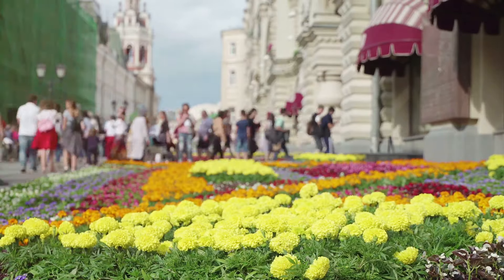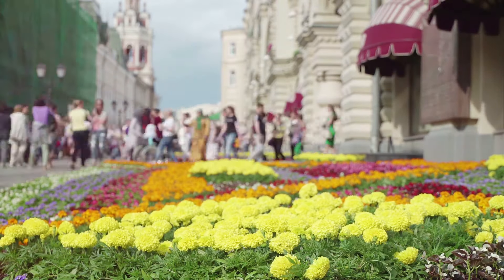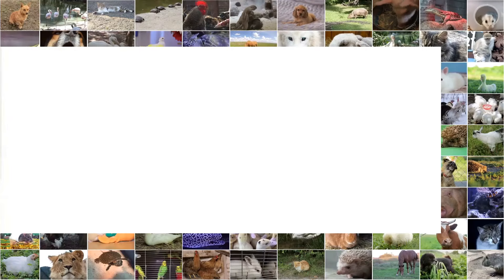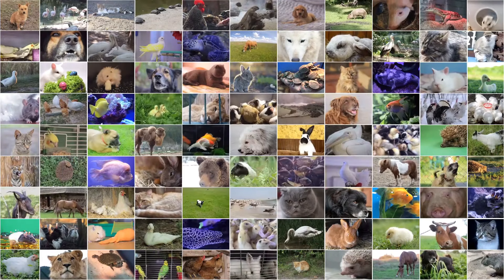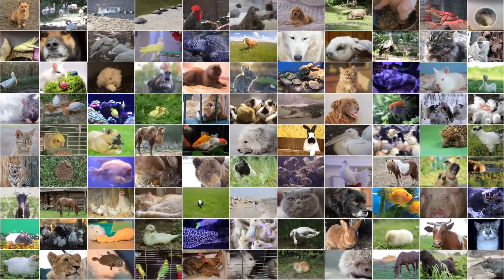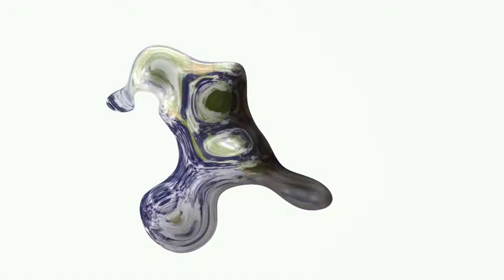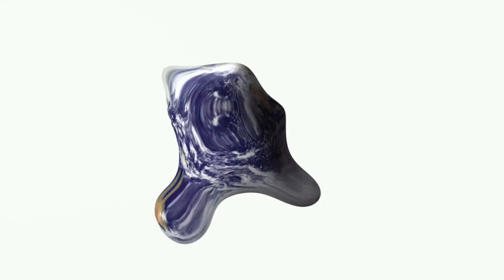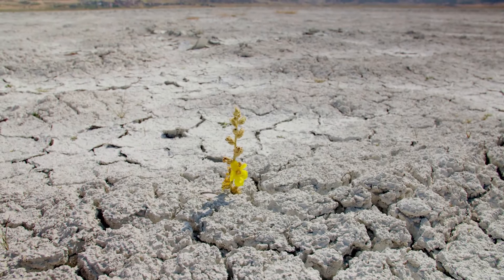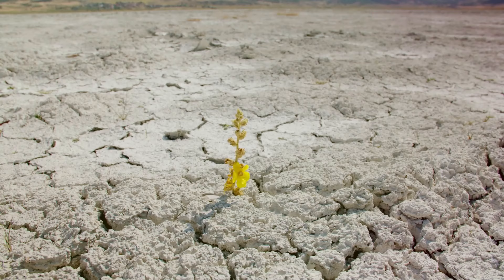Regardless of how life began, it's clear that Earth provided the perfect conditions for it to flourish. The presence of liquid water, a stable climate, and the right mix of chemical elements created an environment where life could evolve and diversify. So whether life started as a cosmic journey or a terrestrial phenomenon, it highlights the remarkable adaptability and resilience of life.